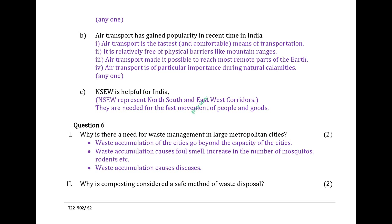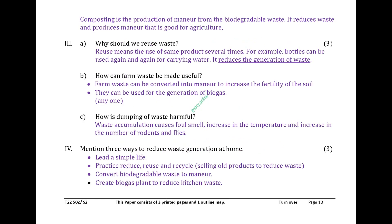Question 6. Why is there a need for waste management in large metropolitan cities? Waste accumulation goes beyond the capacity of cities. It causes foul smell, increase in mosquitoes and rodents, and diseases. Why is composting considered a safe method of waste disposal? Composting is the production of manure from biodegradable waste; it reduces waste and produces manure that is good for agriculture.